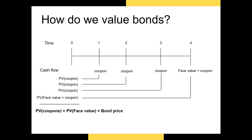In this example, I've placed the timeline of cash flows. We have a series of coupons and the face value representing our cash flows. Notice that this bond makes a coupon payment every year, including the year that it matures. The face value is also paid in year 4. To calculate the price of this bond, we discount all of the coupon payments and the face value back to the present at the yield to maturity using the time value of money formula. The sum of all those discounted future cash flows is the price of the bond.